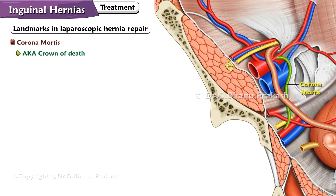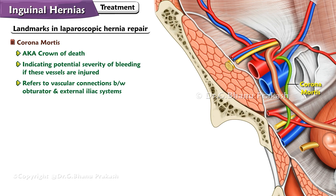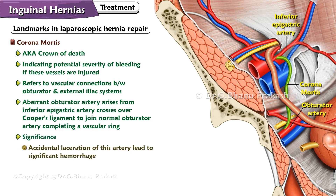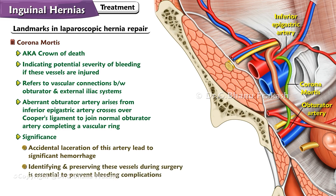Corona Mortis, also known as the crown of death, indicates the potential severity of bleeding if these vessels are injured. It refers to the vascular connections between the obturator and external iliac systems. An aberrant obturator artery, which often arises from the inferior epigastric artery, crosses over Cooper's ligament to join the normal obturator artery, completing a vascular ring. Accidental laceration of this artery can lead to significant hemorrhage, which may be challenging to control, so identifying and preserving these vessels during surgery is essential.